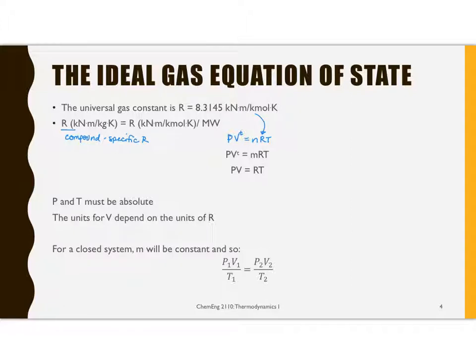Unfortunately, in our book, they don't really distinguish between which of these R's they mean. So, you have to look at the units to be able to identify. And so, if we're using a mass basis, then PV equals the mass times RT. Or, if we want a specific volume or molar volume, we'll use PV equals RT. If we're using the compound-specific R with mass, it's going to be specific volume. And if we are using the universal gas constant, then this will be the molar volume.